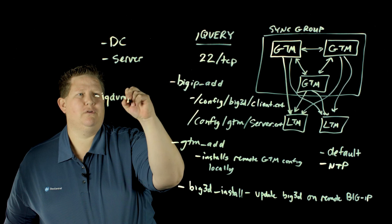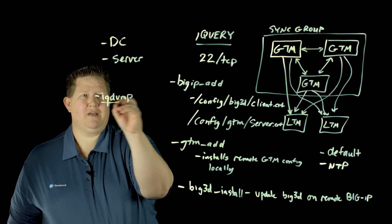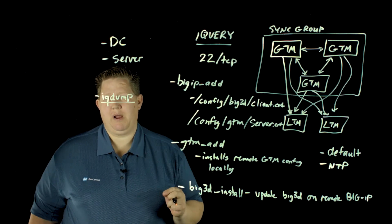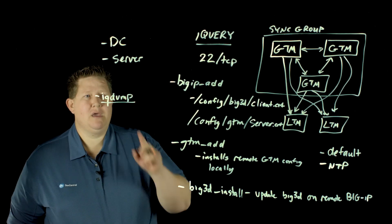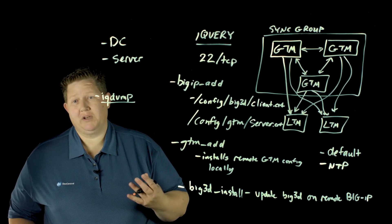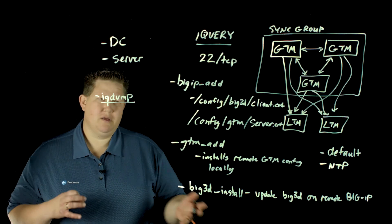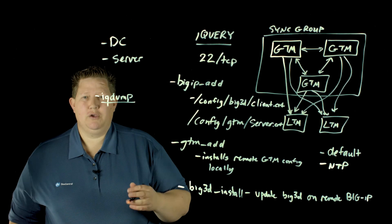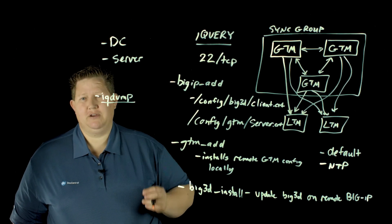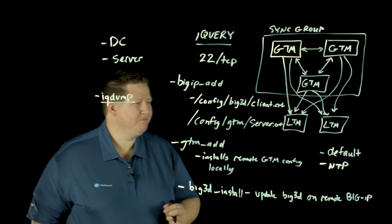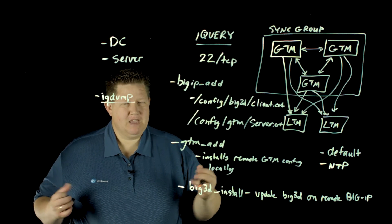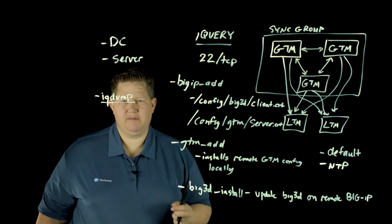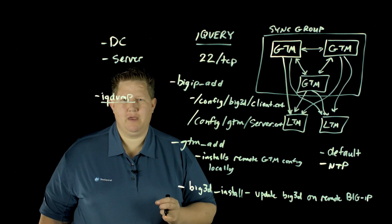And then once that's established, then the command you will use going forward to troubleshoot the connectivity is IQ dump. If IQ dump runs and immediately you get a prompt back, something's broken. Either your certs haven't been exchanged properly or there's no connectivity between them. IQ dump is your friend. And you can also use it to watch the messaging that is flowing between GTMs and between a BigIP big3d daemon and the GTMs. You'll see all those metrics and config changes or config status changes flowing between them. So you know, the very high level overview of iQuery and what it does. If you have any questions, hit me up in the comments on this video or on the Dev Central article. Thank you for joining us. Hit subscribe at the end of this video and we'll see you out there in the community.